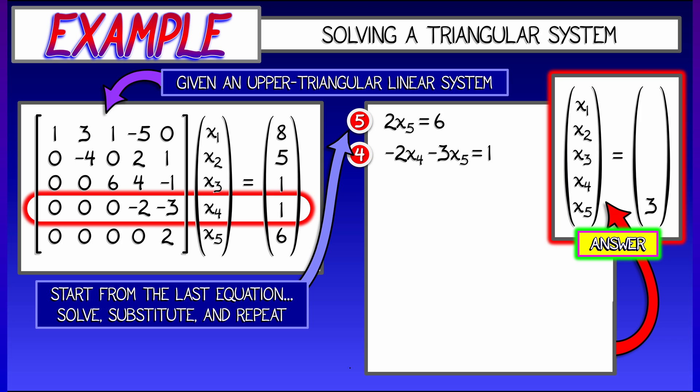But look, we already know what X5 is. It's equal to 3. So we can plug that into the equation and then solve that for X4. In this case, we're going to get that X4 equals negative 5.